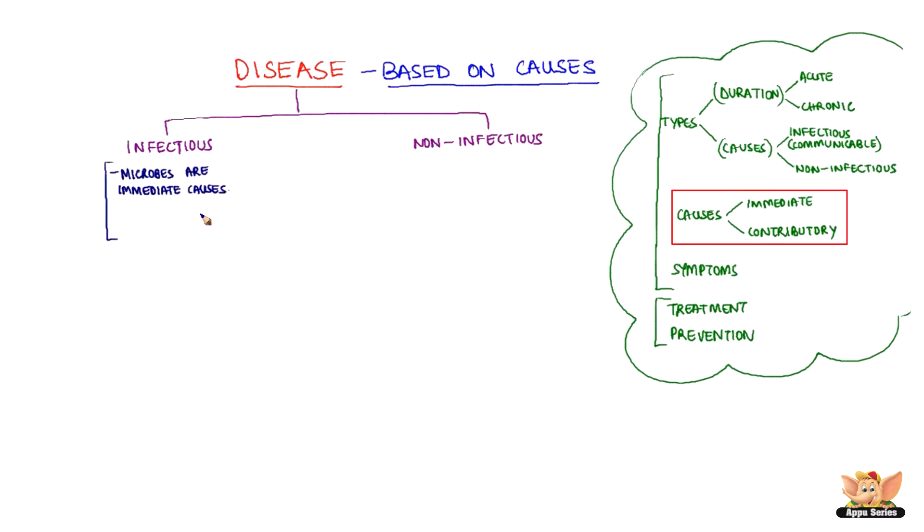Infectious diseases are the diseases where microbes are the immediate causes. Since these diseases are caused by external causes like microbes, it can spread in the community. So infectious diseases are also known as communicable diseases.